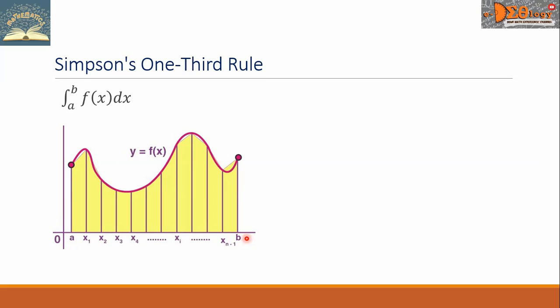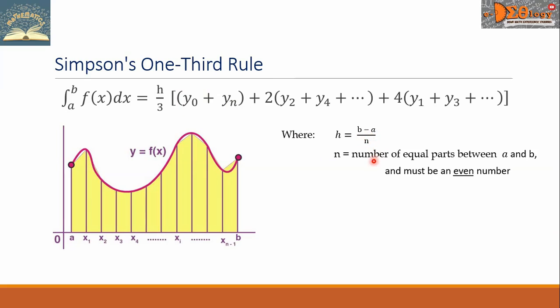Now Simpson's one-third rule estimates the area by this formula. The h here is the width with formula b minus a all over n. And this n here is the number of equal parts between a and b and must be an even number.